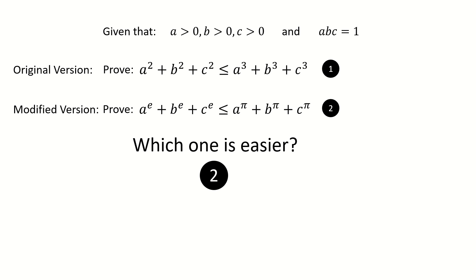They are distracting you. On the other hand, if we look at the modified version, since all indices are irrational numbers, so there is no hope to do those tricks. In this case, you don't need to waste time on these wrong directions.